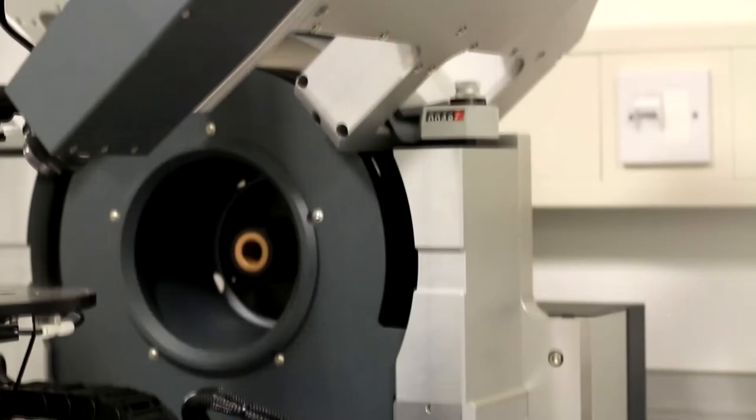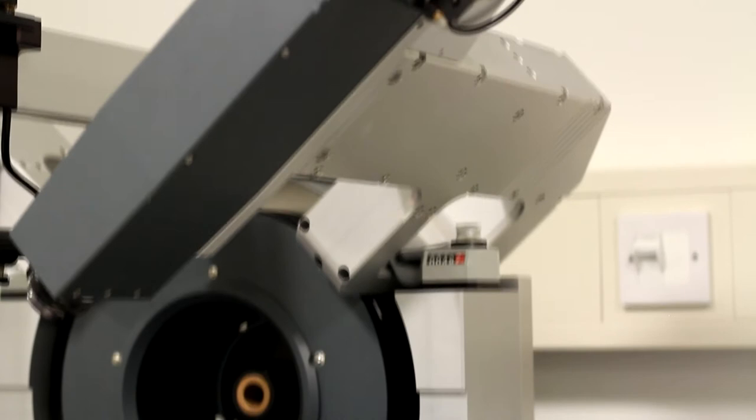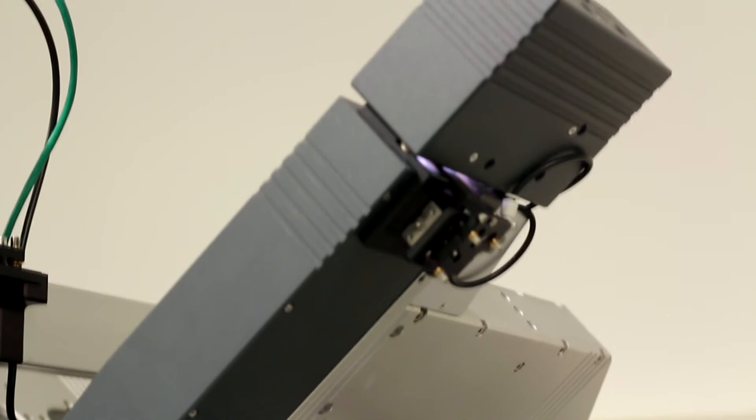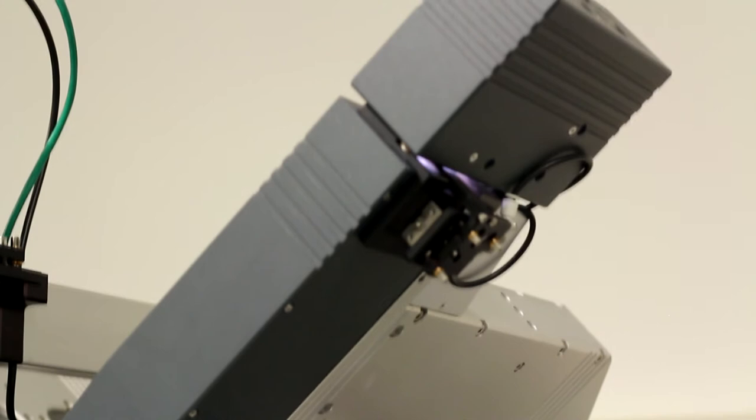The analyzer arm consists of a system of optics, a rotating compensator, and UV, VIS, and NIR detectors. This allows for the measurement of phase and polarization changes in the light following interaction with the sample, from which the sample optical properties can be modeled.